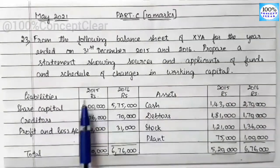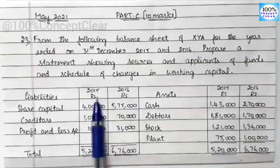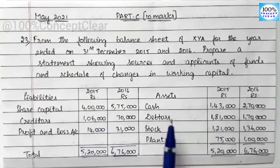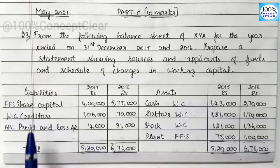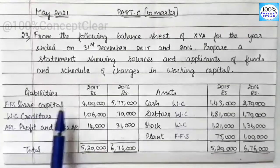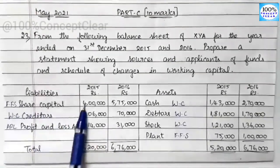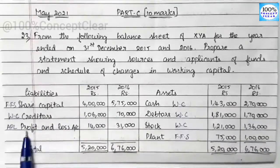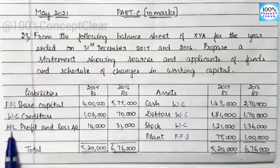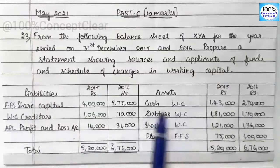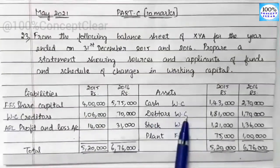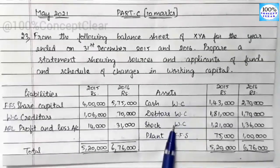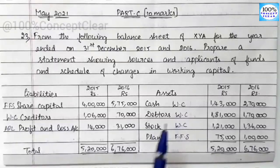Looking at 2015 and 2016, in our balance sheet we have share capital, which appears in the fund flow statement. We have the profit and loss account — the adjusted P&L account. Cash, debtors, and stock are working capital items. Plant appears in the fund flow statement. Working capital comprises current assets and current liabilities.